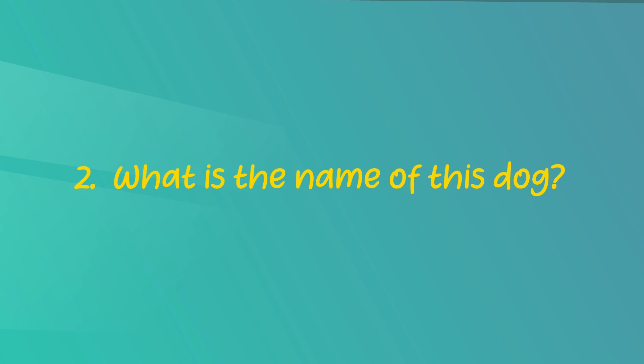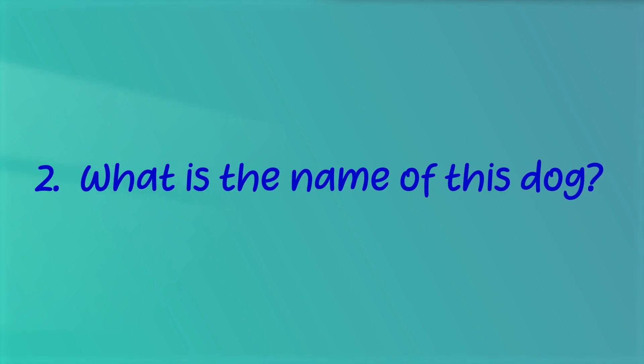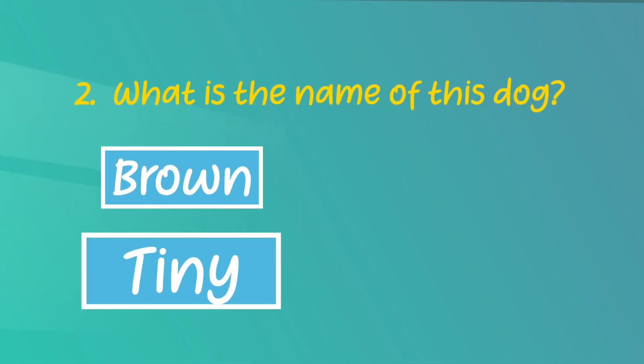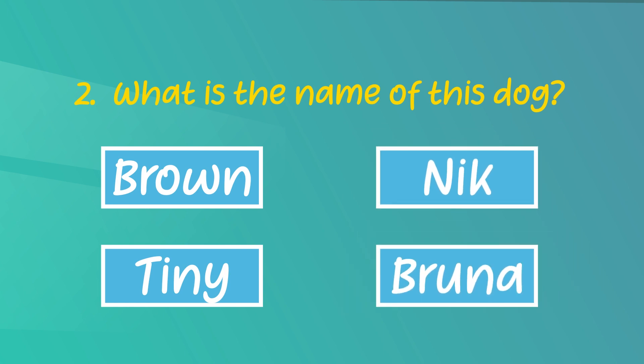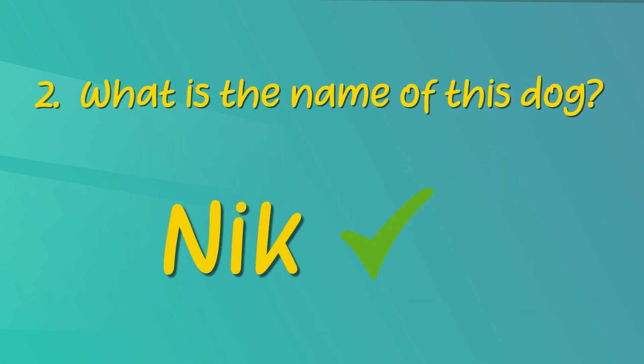Let's move on to the second question. The question asks: What is the name of this dog? Again, four options: Brown, Tiny, Nick, and Bruna. You are correct — the dog's name is Nick.